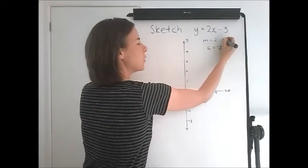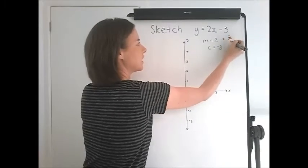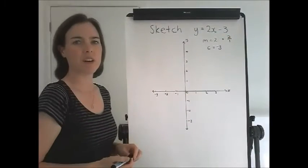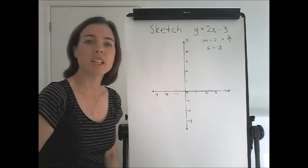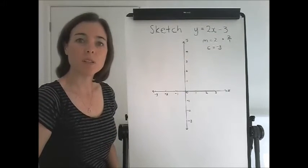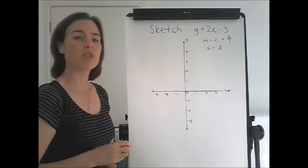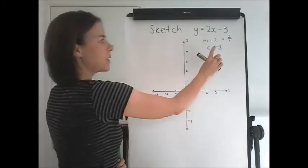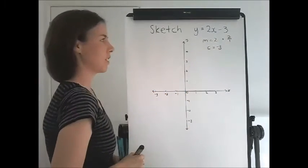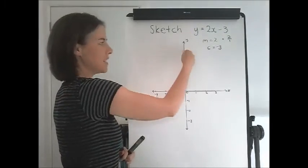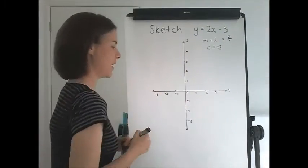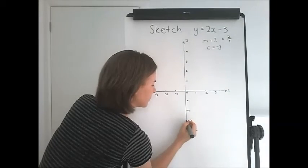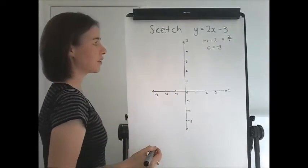Gradient, you always want to express that as a fraction if you're going to draw the graph. Now it wasn't already a fraction, it was just the number 2. So we need to write it as 2 over 1. Now we place the y-intercept on the graph first, because it is where the graph cuts the y-axis. So our graph will go through negative 3.